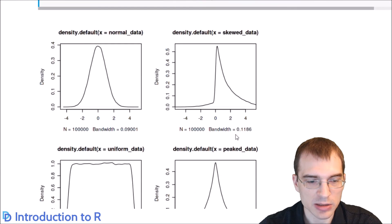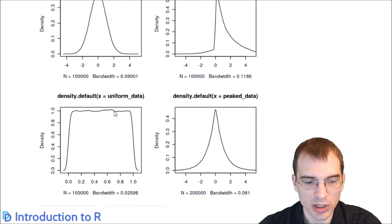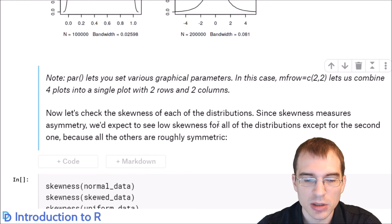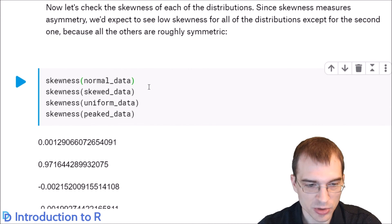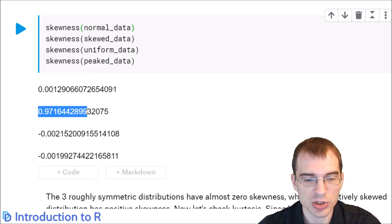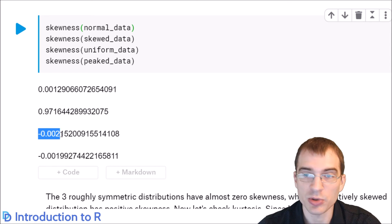Running the plots: the normal data should have low skewness because it's symmetrical. The skewed data is heavily right-skewed. The uniform data has values drawn evenly, so it shouldn't show much skew. The peaked data has a sharp peak and is symmetric, so it shouldn't show skew either but should show higher kurtosis. To check skewness in R, you use the skewness function. The normal data had about zero skew, the skewed data had almost 1.0 for the skew rating, and the uniform and peaked data both had near zero, which makes sense since those were symmetric.